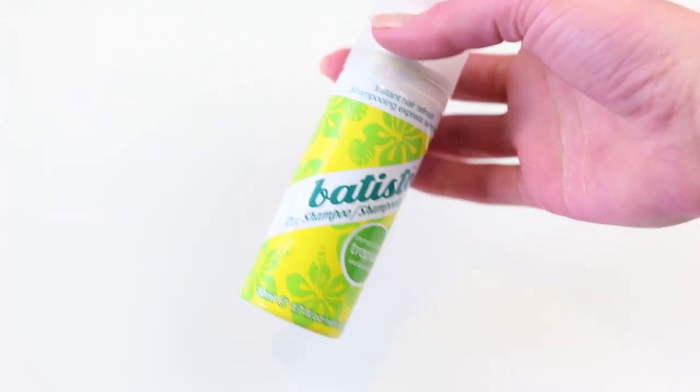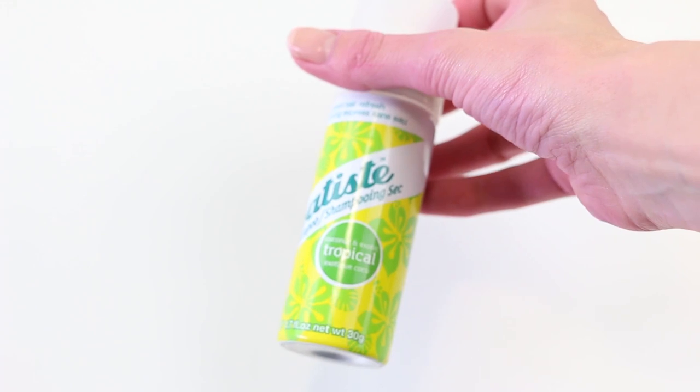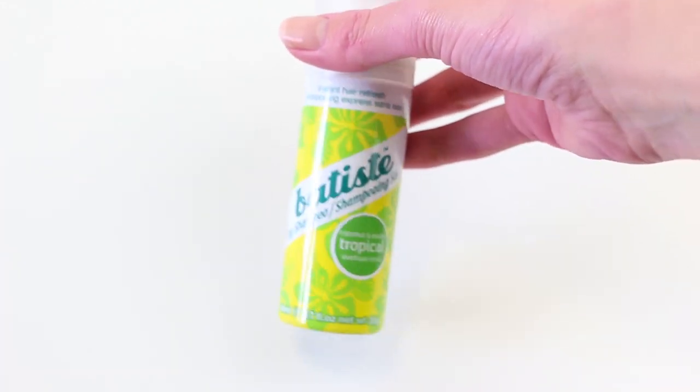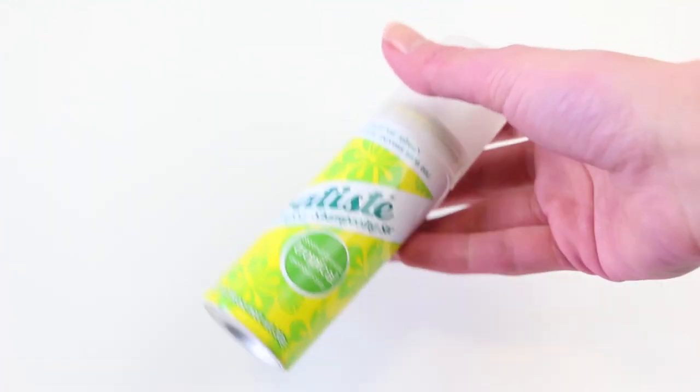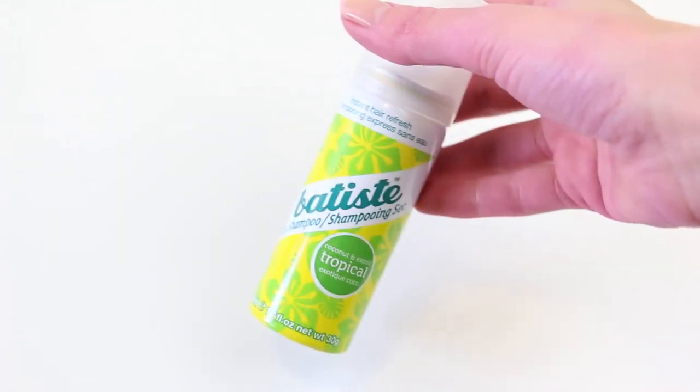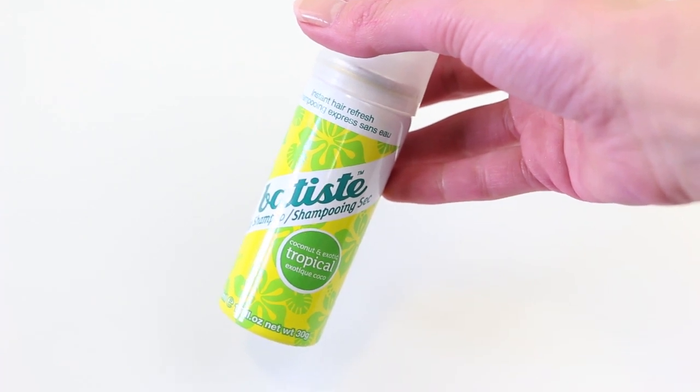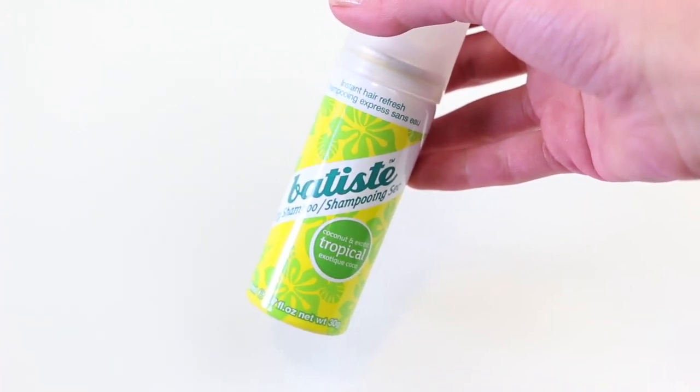This is a mini. It is a 50 mil or net weight 30 gram little spray thing, and we want to see how much cornstarch actually comes out of this. So we're going to spray it into a graduated cylinder and see how much is in there.